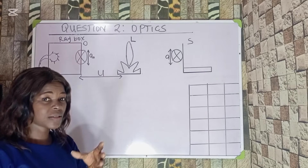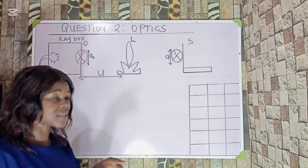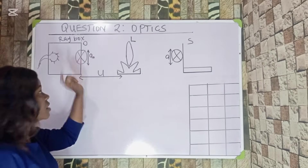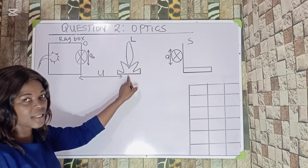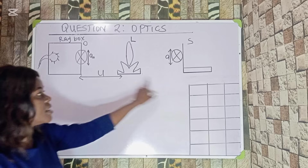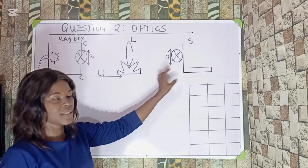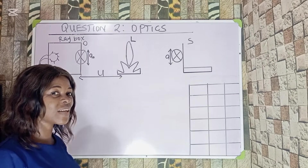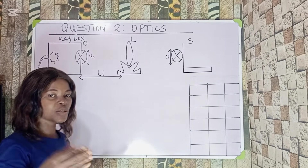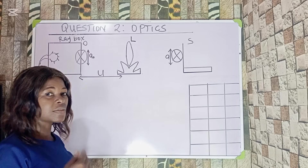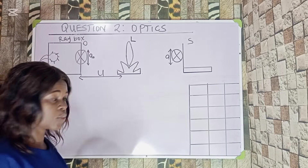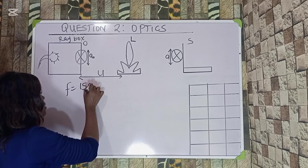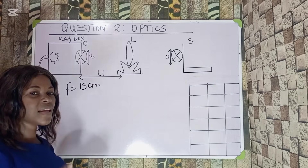These are the apparatus required for this experiment. This is a robust box with a small opening, a convex lens, a lens holder, and a screen where the image of the object is seen. The focal length of this convex lens from the apparatus provided is 15 centimeters, and it is constant — so f = 15 cm.